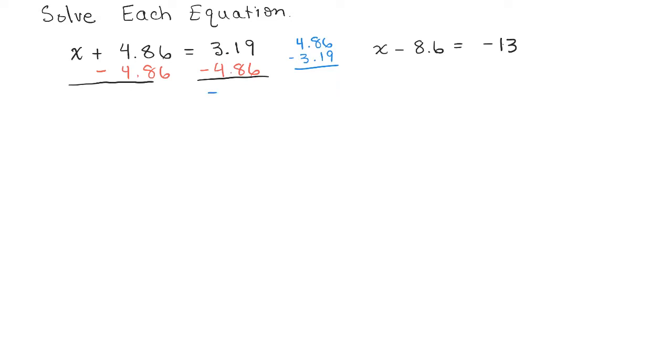So you know the answer over here is going to be negative, but we need to subtract 4.86 minus 3.19. There's a lot of ways you might know how to subtract with decimals, but this is what I get when I subtract. So this is negative 1.67. So looks like that is the solution.